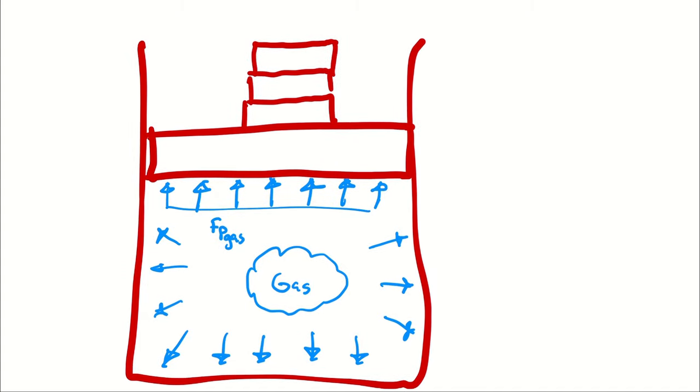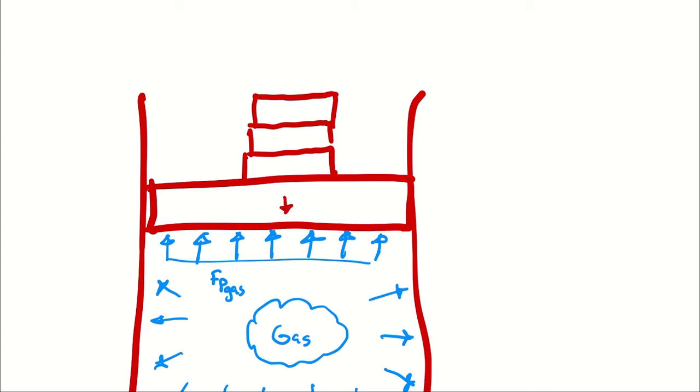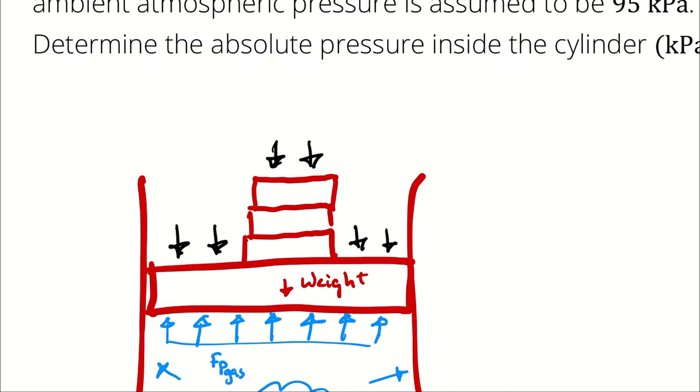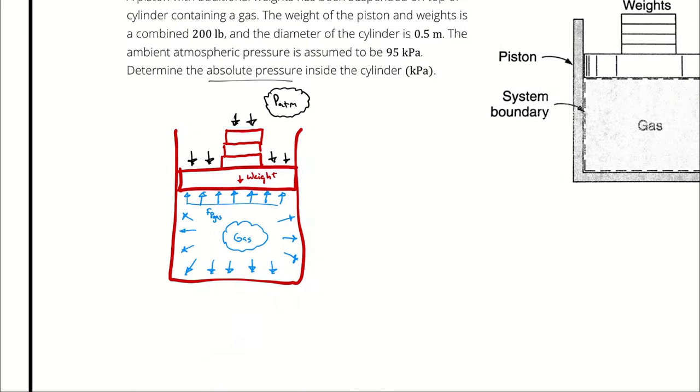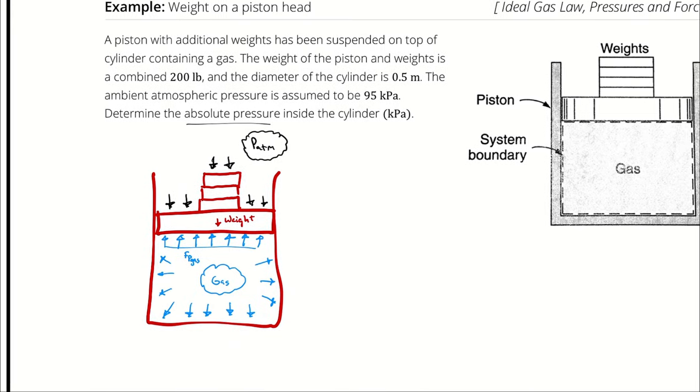The force on the piston in the downward direction includes the weight of the weights and the piston itself, but it also includes the force applied by atmospheric pressure. Because since we are looking for absolute pressure, we are including the effects of the atmosphere. Because this problem is in equilibrium, that is the piston isn't moving.